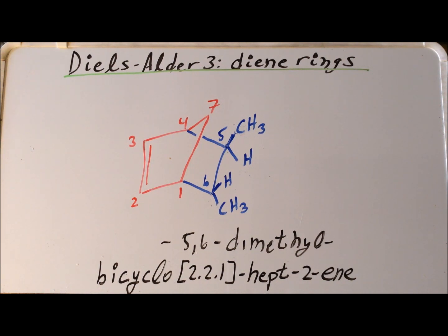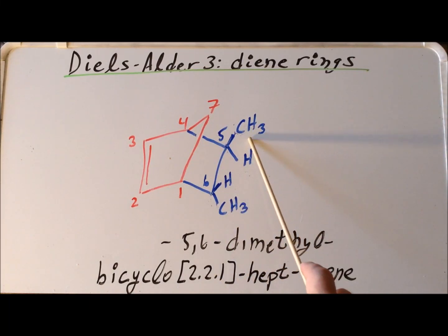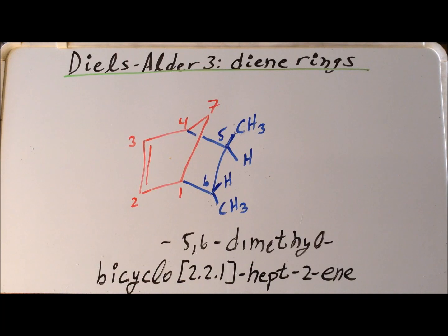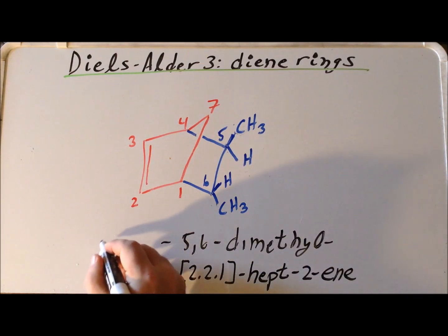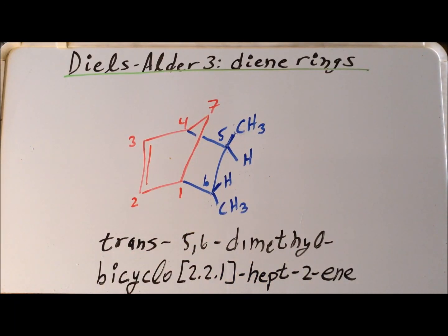On the other hand, if we start with trans-2-butene as our dienophile, we end up with the methyl substituents being trans to each other — one methyl group pointing up relative to the ring and one methyl pointing down. So this gives us trans-5,6-dimethylbicyclo[2.2.1]hept-2-ene. We notice that if we start with a cis-substituted dienophile we end up with a cis endo-product, and if we start with a trans-substituted dienophile we end up with a trans-product.